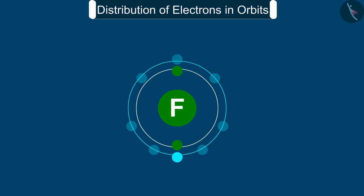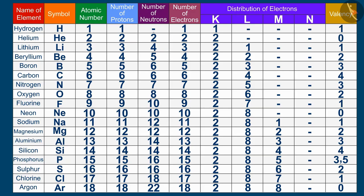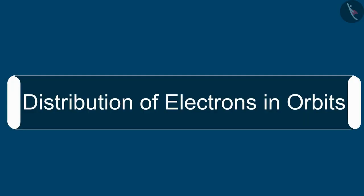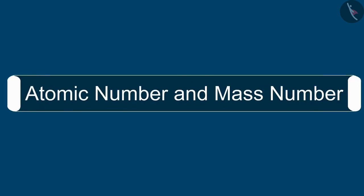Therefore we can say that an atom of each element has a definite combining capacity called its valency. In this video we studied the distribution of electrons in orbits. In the next video we will learn about atomic number and mass number.